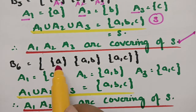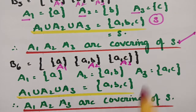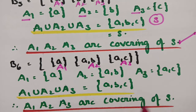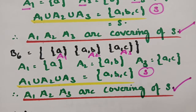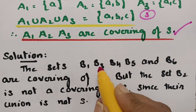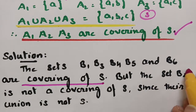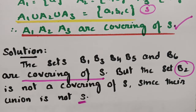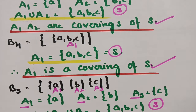For B6, there are subsets A1, A2, and A3. There can be common elements among them. Making their union gives {A, B, C}, which is nothing but the main set S. Therefore A1, A2, A3 are the coverings of S. To summarize: B1, B3, B4, B5, and B6 are coverings of S, but B2 is not a covering since its union is not S.